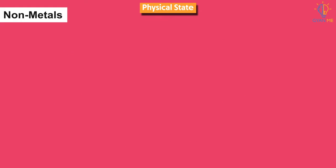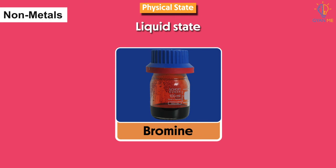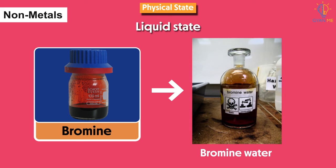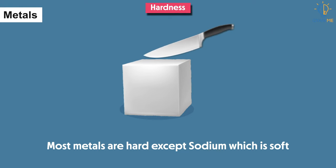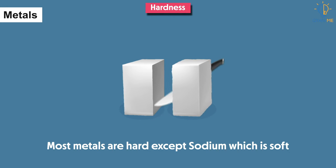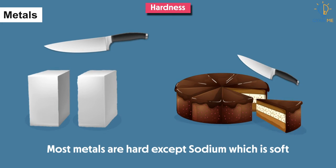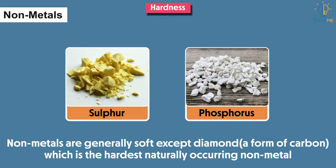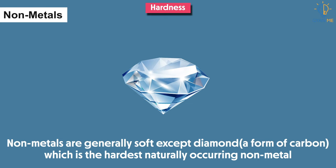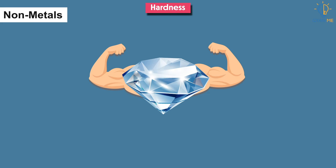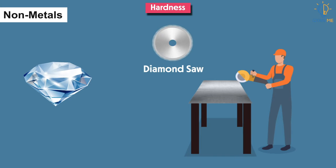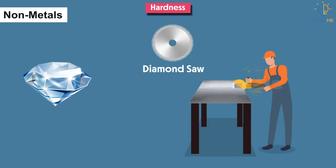Some non-metals also exist in liquid state. For example, bromine — bromine usually exists in the form of a liquid called bromine water. The second property is hardness. Most metals are hard except sodium, which is soft. Sodium can be cut using a knife just like we can cut a cake with a knife. While non-metals are generally soft except diamond. Diamond is a non-metal which is the hardest naturally occurring substance, and because of this hardness, it is used for cutting sheets of metals in cutting tools.